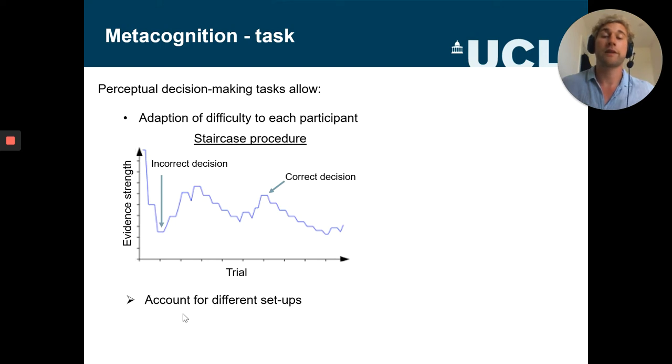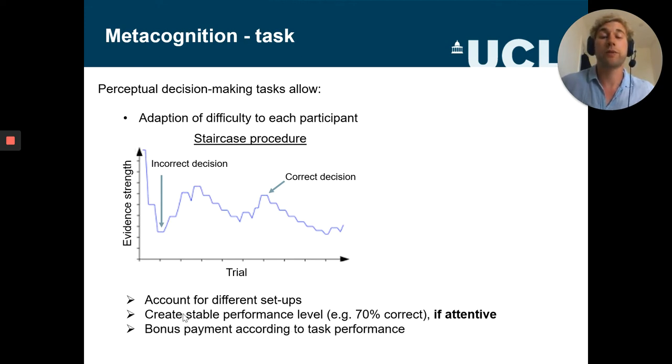This is something by the way you can't really use the task builder for, you have to code that up, but I think it's really worth the effort. Because if you do that throughout the whole task, then you can really adapt the difficulty for each participant and to large degree that then accounts for the differences in setups. Moreover, if you staircase through the whole task, participants will converge on a set performance level that is known to us. For instance, we have staircase in a way that participants will get 70% correct decisions, and that always works as long as the participant is attentive to the task. So we have already like a built-in attention check in these tasks. And finally, since we know quite narrowly how well a participant will perform, we can then also pay them based on their task performance. Really, usually we pay them quite a lot of bonus payment based on their performance to ensure that they're really motivated to do the task as well as possible.